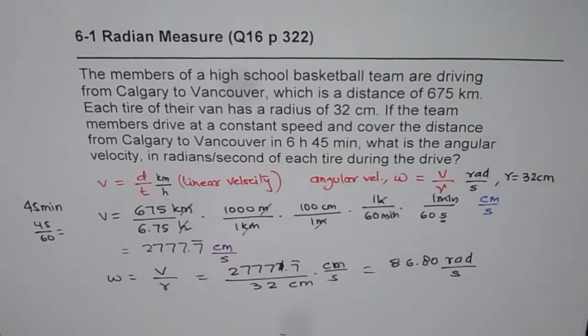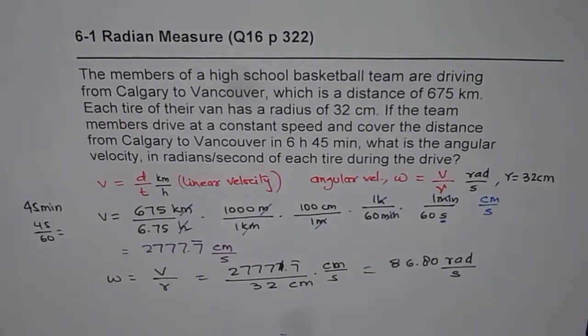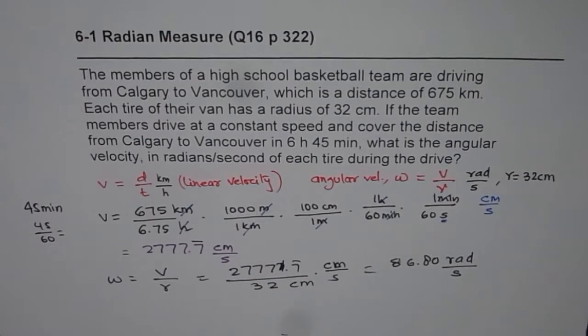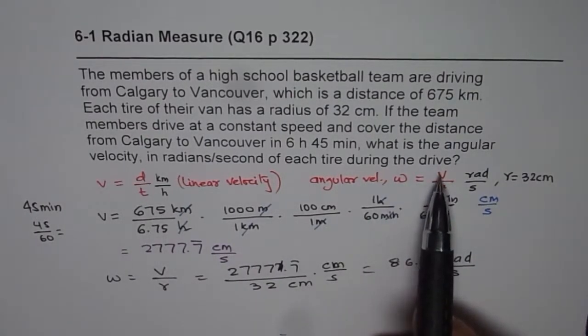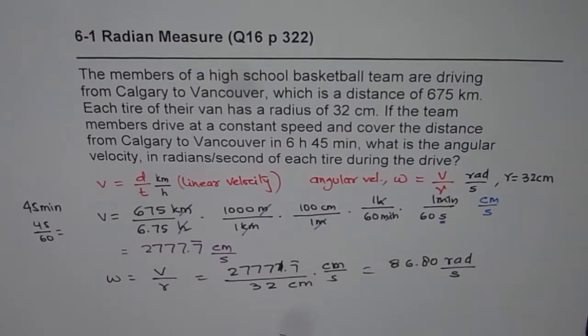I hope there could be some mistake in the calculation, but I hope you understand the method which we adopted. In this question, it is kind of tricky in the sense that you need to convert the units and use proper units. Also remember these two formulas: velocity is distance over time, and angular velocity is velocity over the radius of the circle. In this case, it is the tire. I hope that helps. Thank you and all the best.